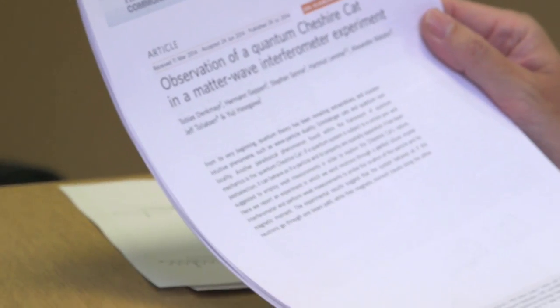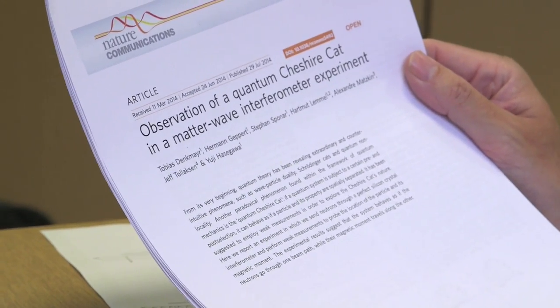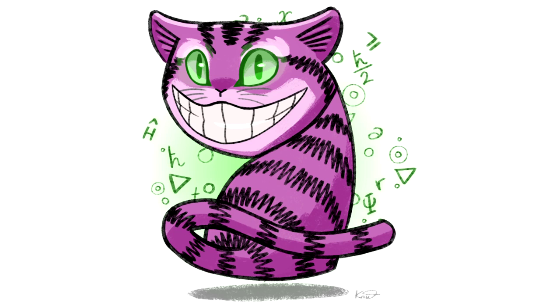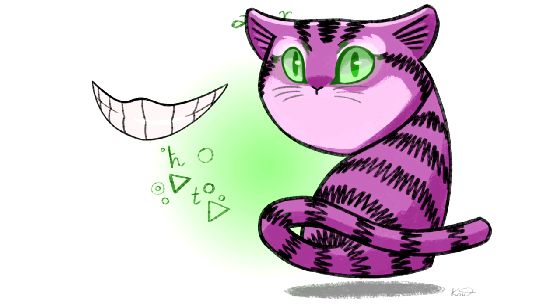So this is a paper entitled Observation of a Quantum Cheshire Cat in a Matter-Wave Interferometer Experiment. Although it's a great tagline, it actually fits as well. They have done this amazing thing, so just as your Cheshire Cat, somehow the smile gets separated from the cat, they've basically taken some property of an elementary particle, in this case a neutron, and separated it from the particle.